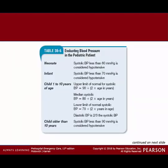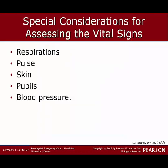Blood pressures: for neonates, anything less than 60 is hypotensive; less than 70 for the infant one to two years of age. Again, 70 plus two times their age gives the lower limit, and then in children over 10, their systolic blood pressure should be no less than 90. Assessing respirations, pulse, skin, pupils, blood pressures — all this stuff is important. These are vital signs: respirations, pulse, skin color, pupils, and blood pressure will give us a lot of pieces to work with.